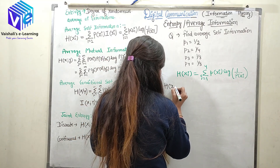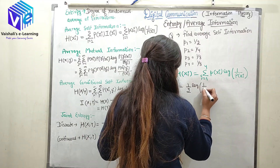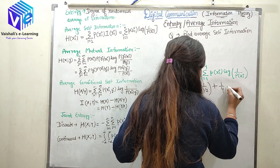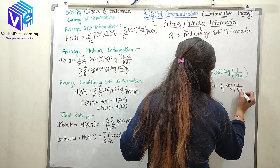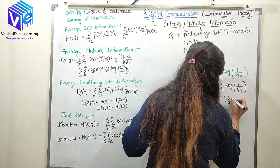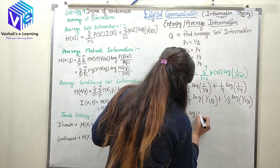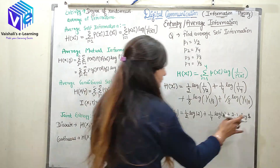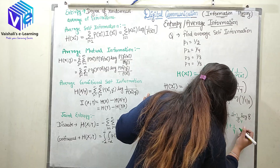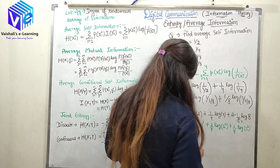For the first symbol p(x_1) = 1/2, so we get (1/2)·log(2). For the second symbol p(x_2) = 1/4, giving (1/4)·log(4). For the third symbol p(x_3) = 1/8, giving (1/8)·log(8). For the fourth symbol p(x_4) = 1/8, giving (1/8)·log(8). Now, 2 = 2^1, 4 = 2^2, and 8 = 2^3.